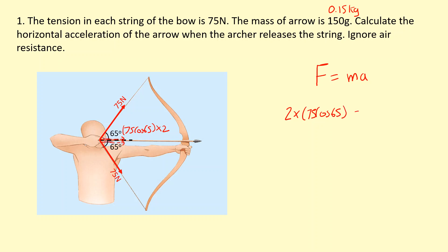And that's going to equal the mass of the arrow, 0.15, times acceleration. And if you solve this, divide both sides by 0.15, and you get a is equal to 423 meters per second squared.